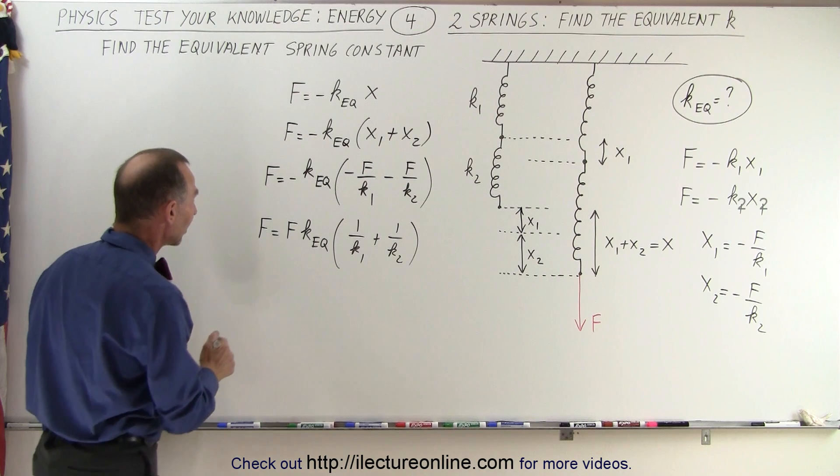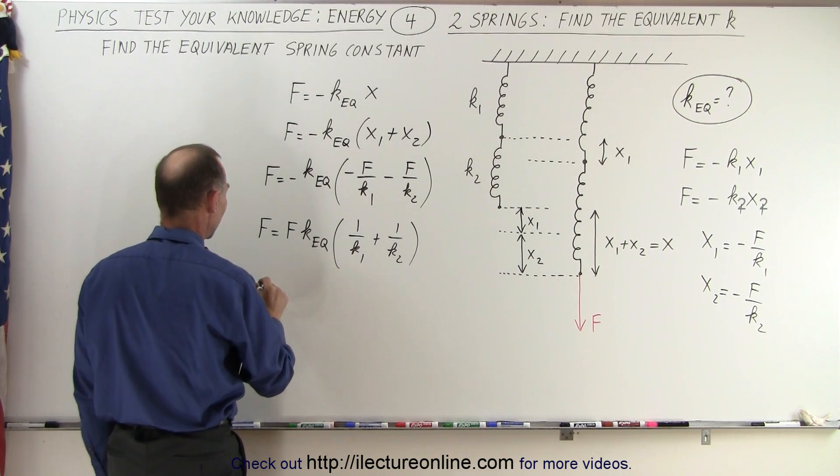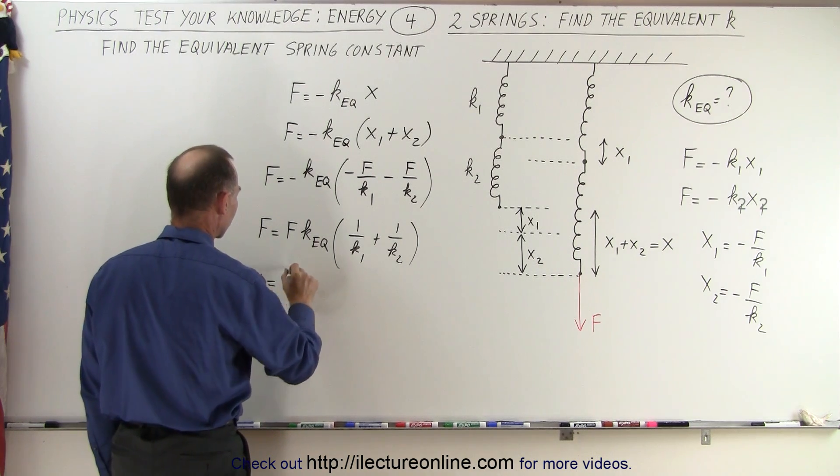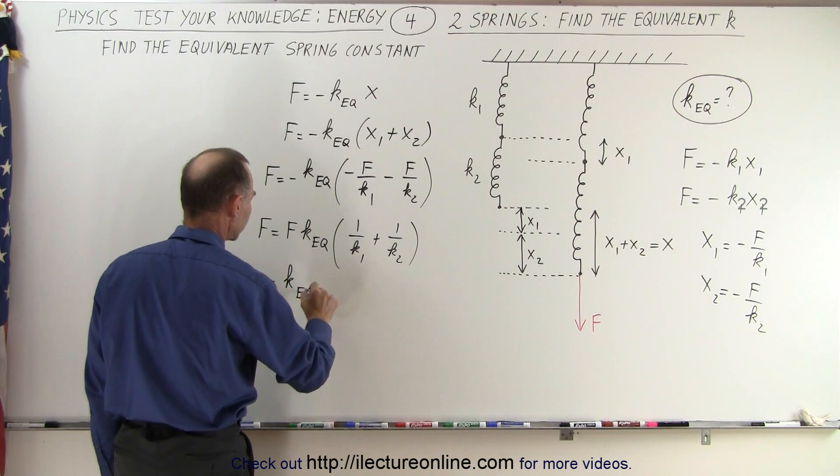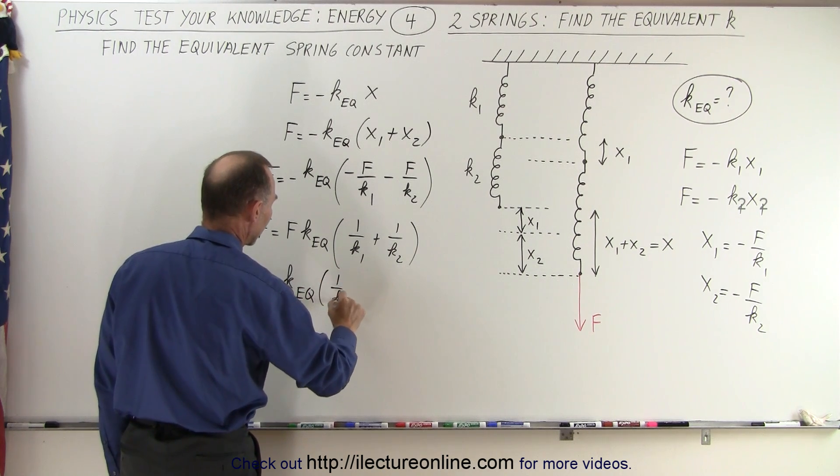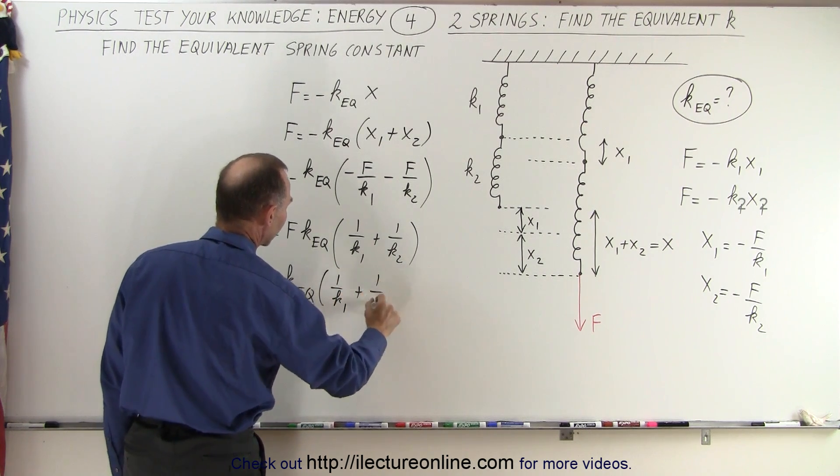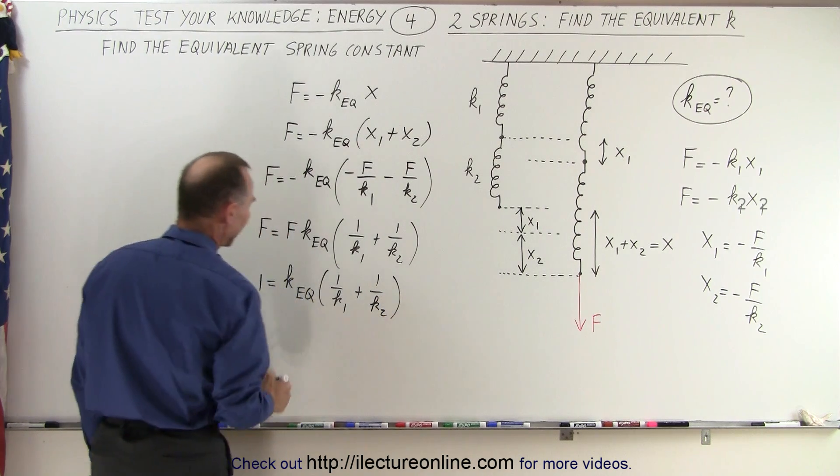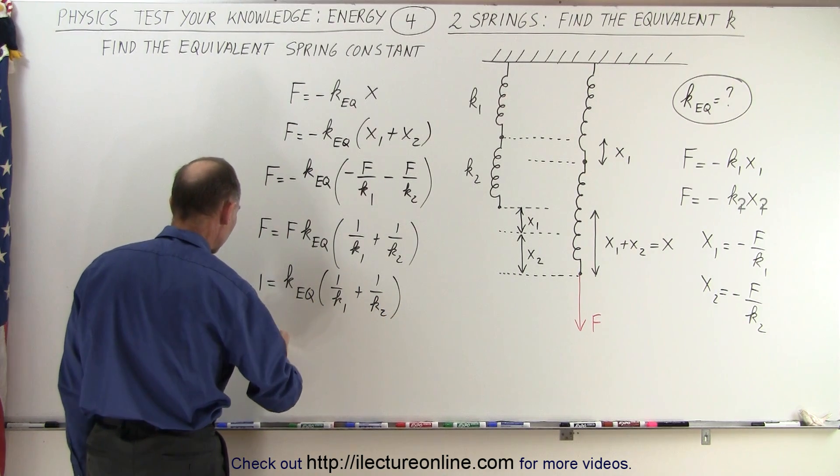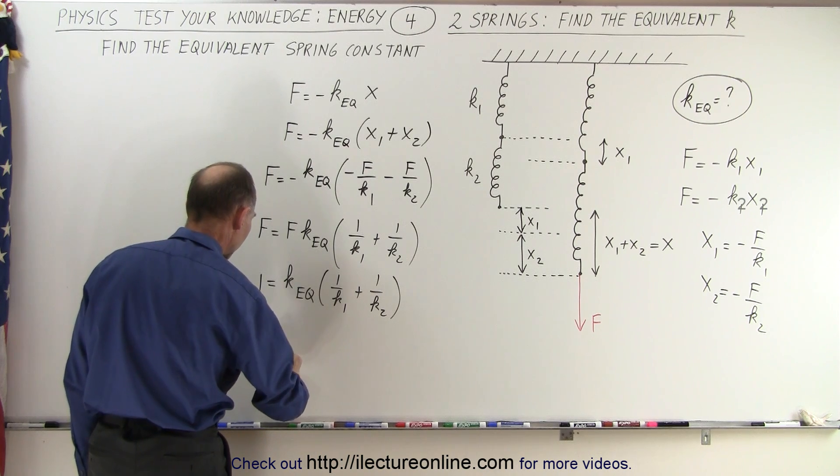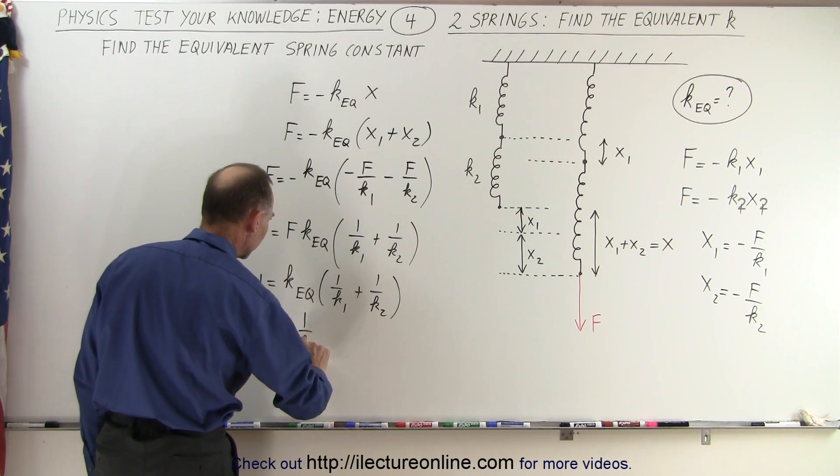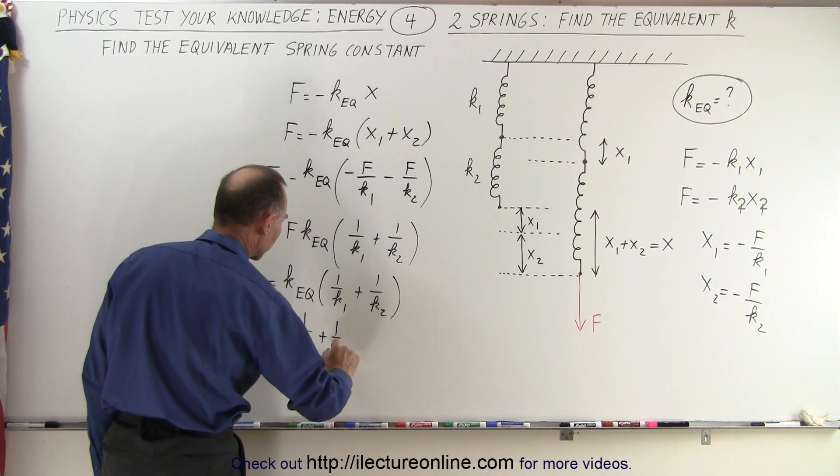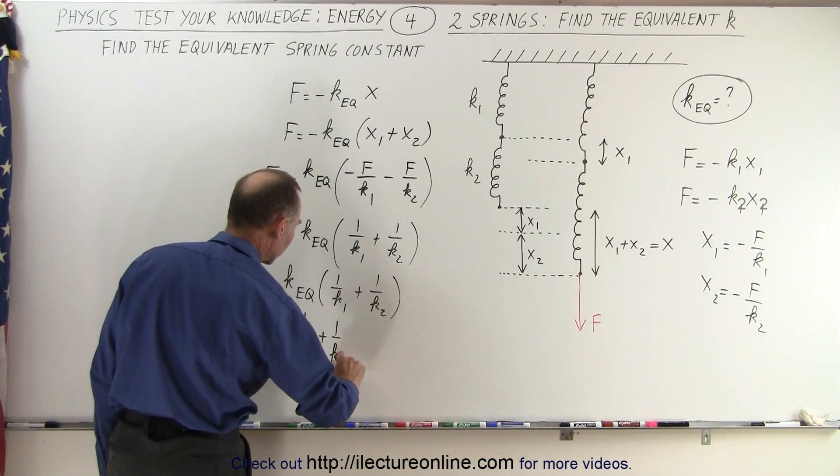And then we have an f on both sides, so we can divide both sides by f, and we can write that 1 is equal to k equivalent times 1 over k1 plus 1 over k2. And then we can bring 1 over k equivalent to the other side, so we have 1 over k equivalent is equal to 1 over k1 plus 1 over k2.